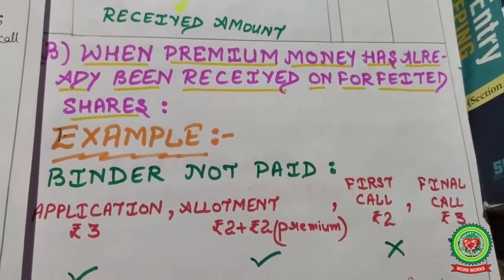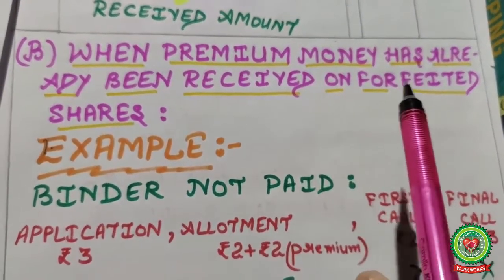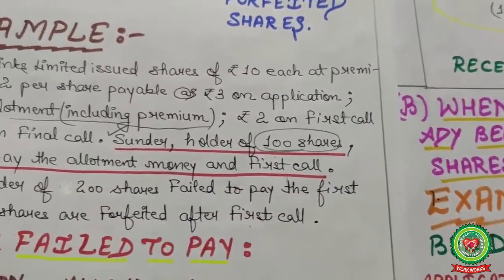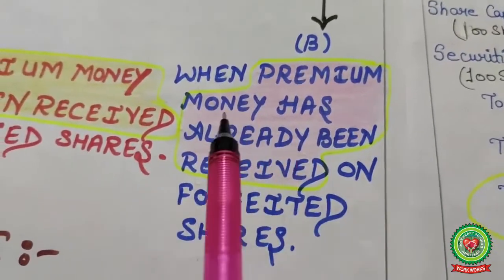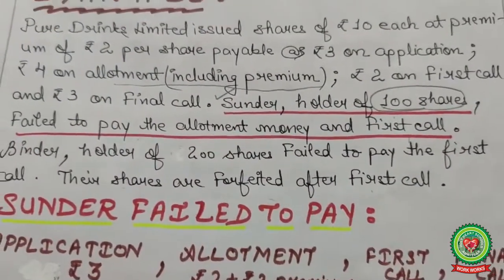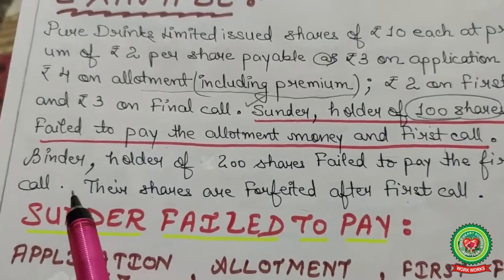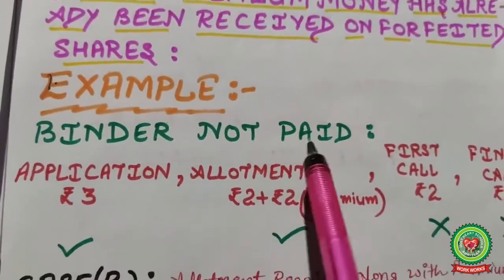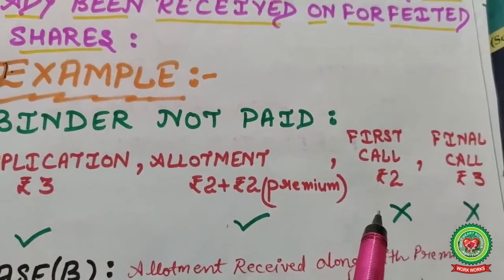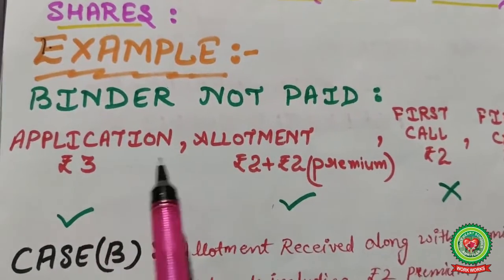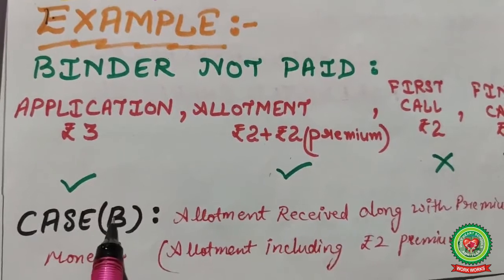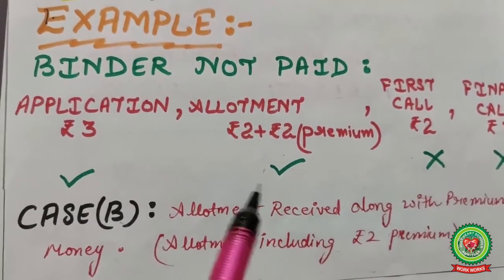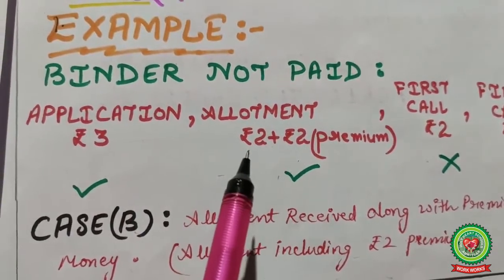Now Case two: when premium money has already been received on forfeited shares. Continuing the same example — another shareholder, Binder, holder of 200 shares, failed to pay the first call; shares forfeited after first call. Binder paid application, paid allotment, did not pay first call; final call not demanded. Since allotment was paid, premium was also paid. This comes under Case B — allotment received along with premium money. Since premium is received, there is no need to debit the security premium account.